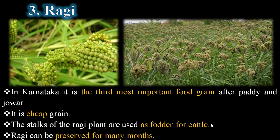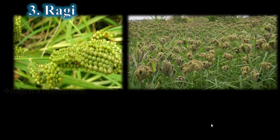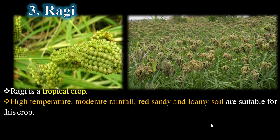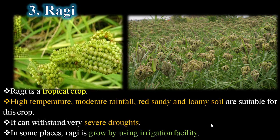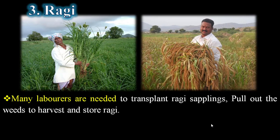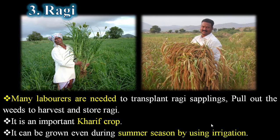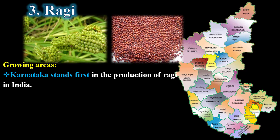Ragi is a cheap grain but nowadays has a lot of importance. The stalks of the ragi plant are used as fodder for cattle. Ragi can be preserved for many months. Ragi is a tropical crop — high temperature, moderate rainfall, and red sandy and loamy soils are suitable. It can withstand very severe droughts. In some places ragi is grown using irrigation. Many laborers are needed to transplant ragi saplings, pull out weeds, harvest, and store ragi.